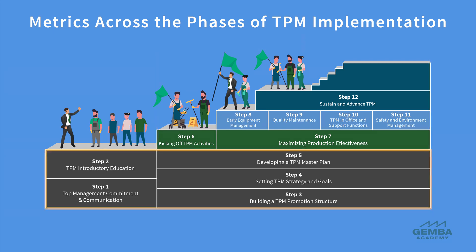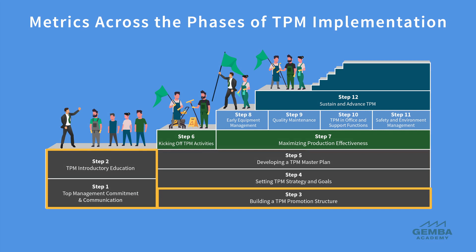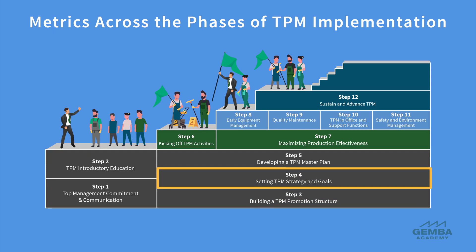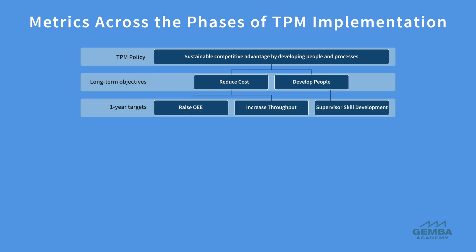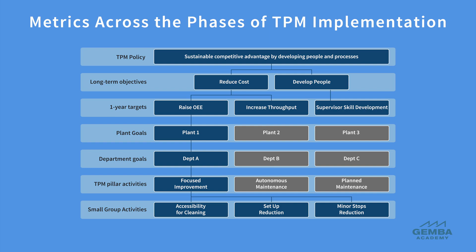In the very first phase of TPM, organizations follow TPM implementation steps one through five. The first three steps involve education, commitment, and creating a support structure. During these first three steps, we become familiar with these TPM metrics. Then, in step four, we set TPM targets based on our business priorities. Once we understand how to measure the impact of TPM, we can decide how we want our TPM program to contribute to our company's long-term vision, and these targets are broken down into shorter-term objectives.